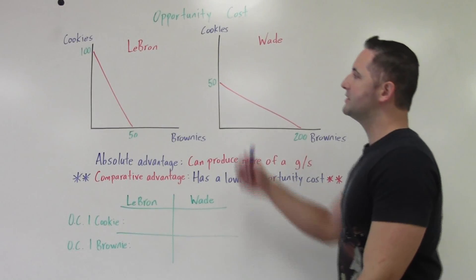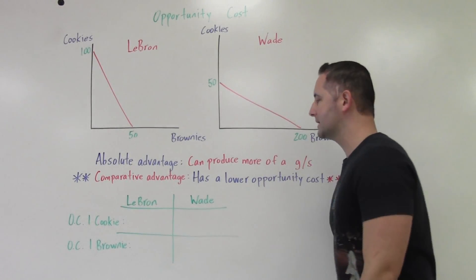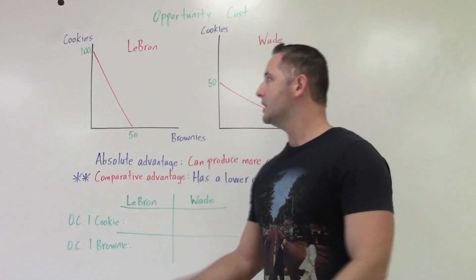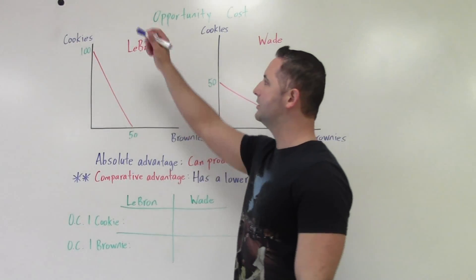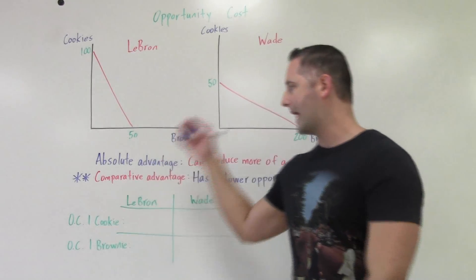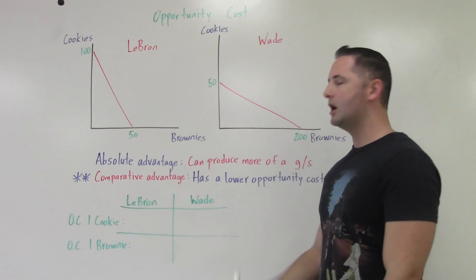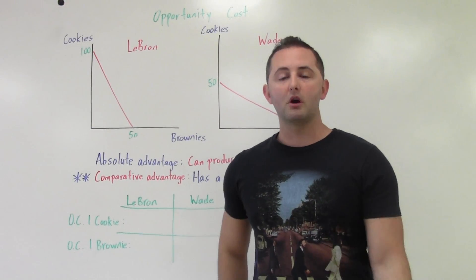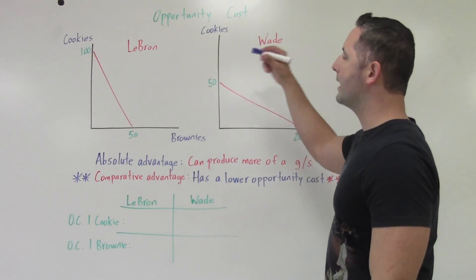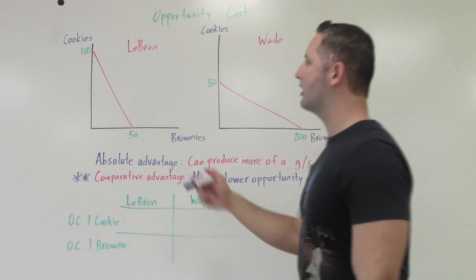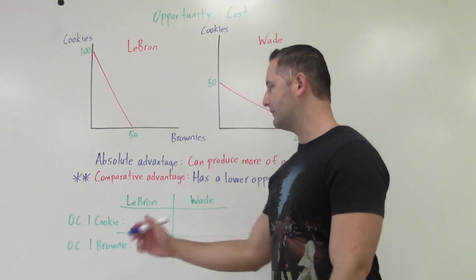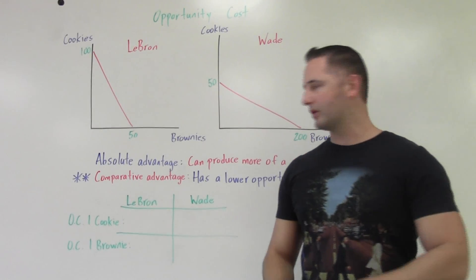When it comes to baking cookies or brownies, comparative advantage means having a lower opportunity cost — to give up less. The question will ask who has the comparative advantage, and to figure that out we need to determine the opportunity cost for each of them. What is LeBron's opportunity cost for making one cookie or one brownie, and same for Wade? Once we have those numbers, we can determine who should specialize in what.